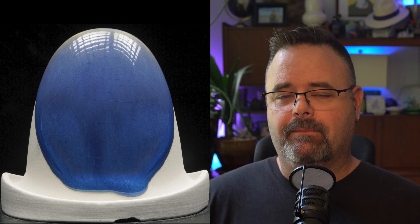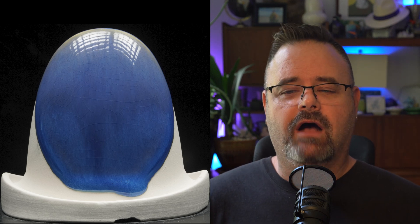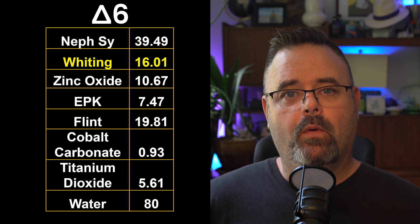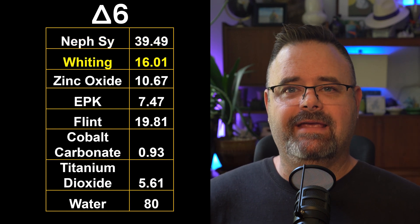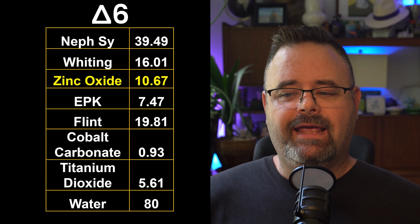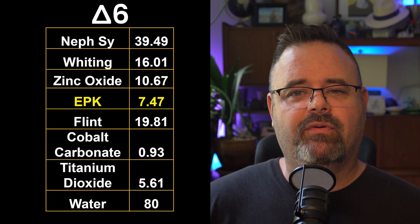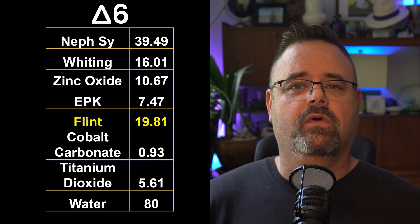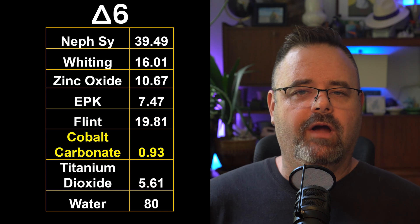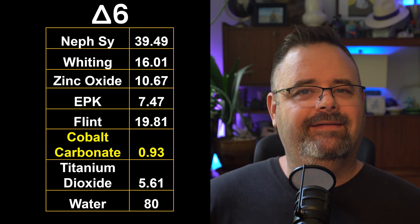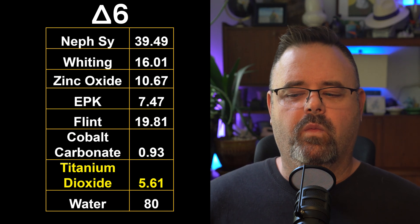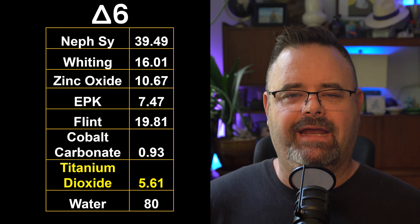This glaze is pretty simple and is a good representation of a Bristol Glaze. Nepheline syenite 39.49%, Whiting (calcium carbonate) 16.1%, Zinc oxide 10.67%, EPK or kaolin 7.47%, Flint (silica quartz) 19.81%. And then our colorants: cobalt carbonate 0.93%, and titanium dioxide — or 'tie-dye' as we know it around here — 5.61%. And then we use 80% water.